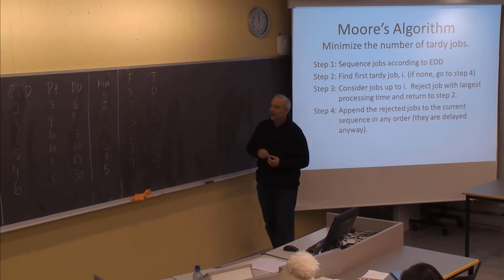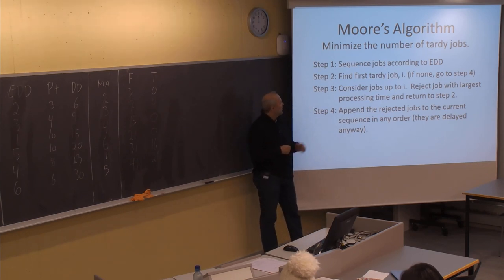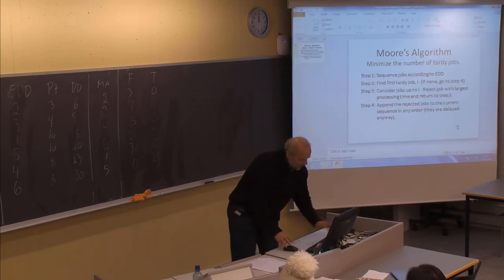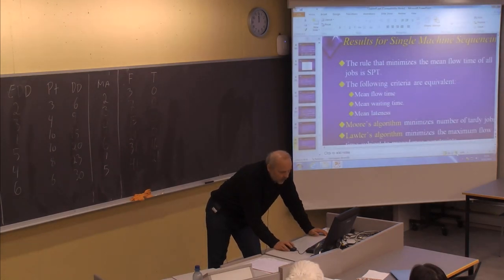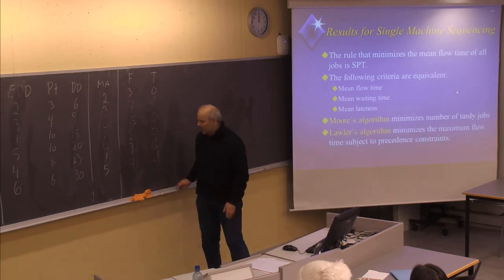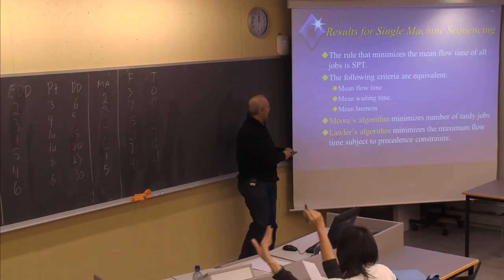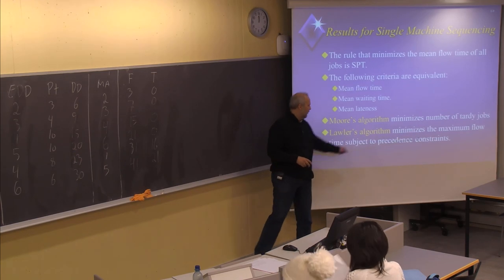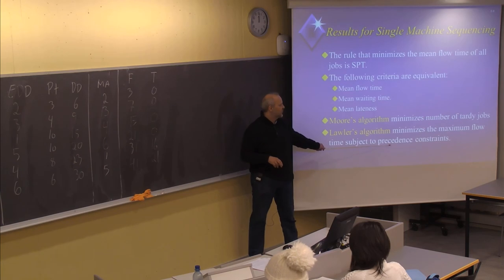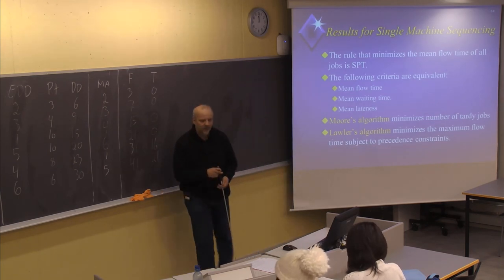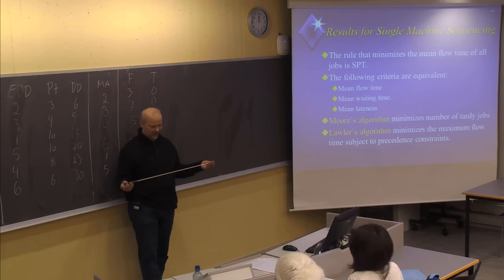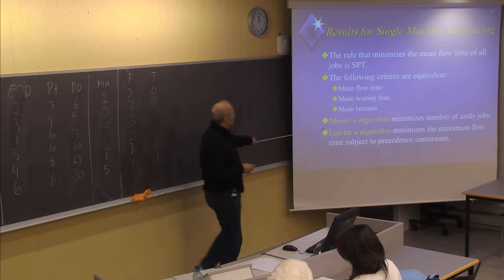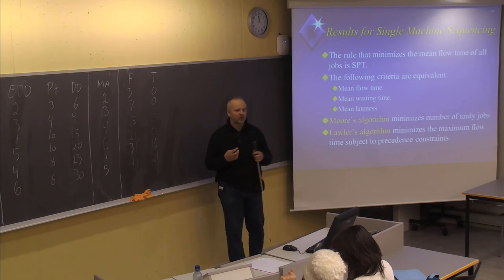There could be other sequences with two tardy jobs, but we know that this sequence has the minimum number of tardy jobs. Moore's algorithm gives you the optimal solution when the objective is minimizing the number of delayed jobs. We are not entirely finished with chapter 8 — next week we will finalize the last part of the curriculum, which is Lawler's algorithm, where you minimize the maximum flow time while also considering precedence constraints, meaning some jobs must be finished before others. Also, assignment number 3 is due tomorrow morning, and next week I will present the solution.